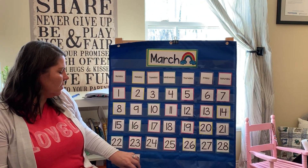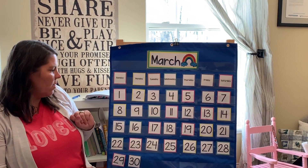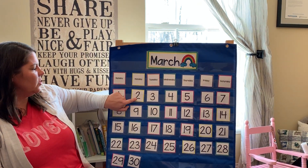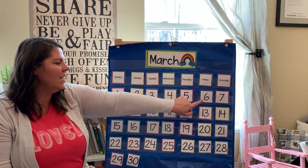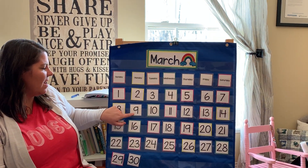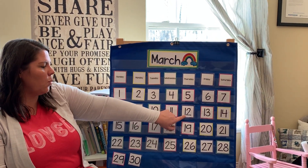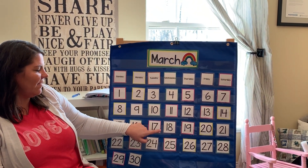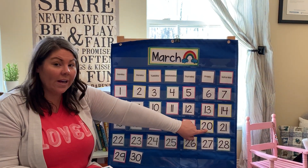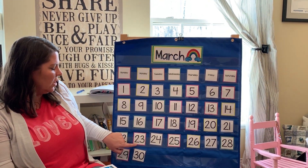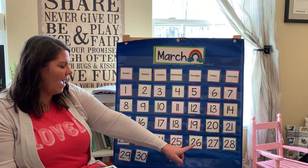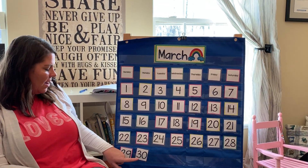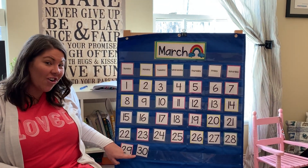Now let's count to see what day we are on. Make sure you're counting with me. 1, 2, 3, 4, 5, 6, 7, 8, 9, 10, 11, 12, 13, 14, 15, 16, 17, 18, 19, 20, 21, 22, 23, 24, 25, 26, 27, 28, 29 — and what comes next? 30, right.